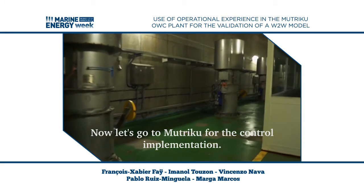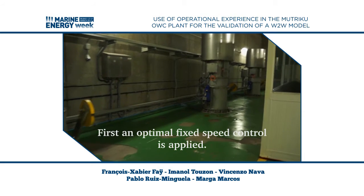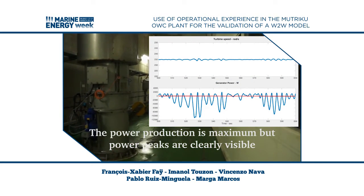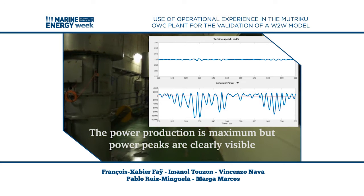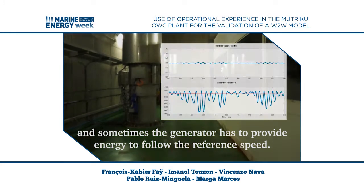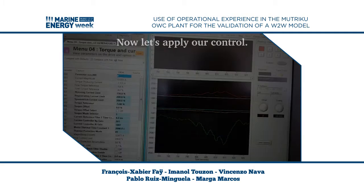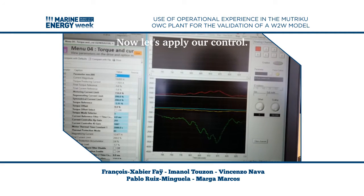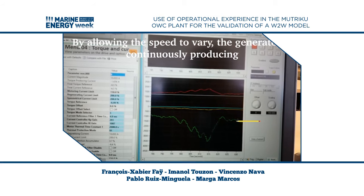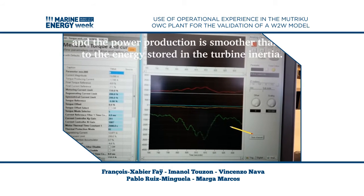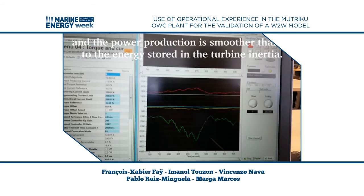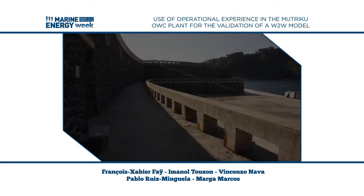Now let's go to Muchuku for the control implementation. First, an optimal fixed speed control is applied. The power production is maximum, but power peaks are clearly visible, and sometimes the generator has to provide energy to follow the reference speed. Now let's apply our control. By allowing the speed to vary, the generator is continuously producing and the power production is smoother, thanks to the energy stored in the turbine inertia.